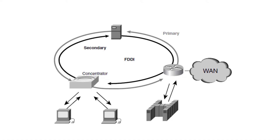FDDI uses dual-ring architecture, with traffic on each ring flowing in opposite directions. This is called counter-rotating. The dual rings consist of a primary and a secondary ring. During normal operation, the primary ring is used for data transmission, and the secondary ring remains idle. The primary purpose of the dual rings is to provide superior reliability and robustness.